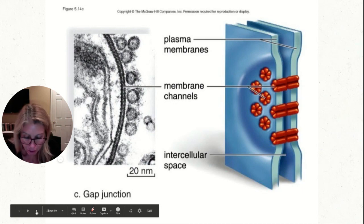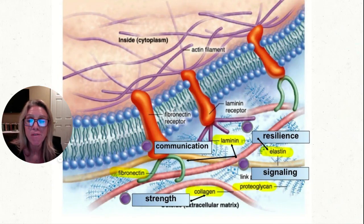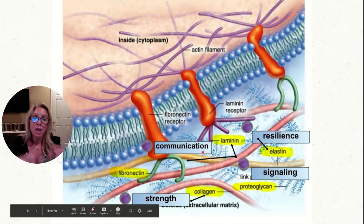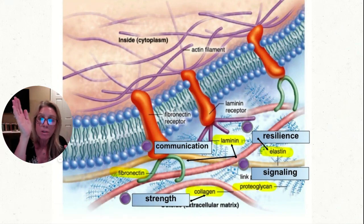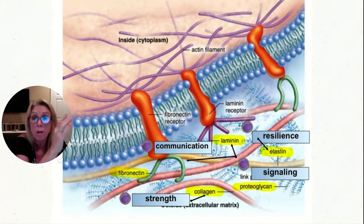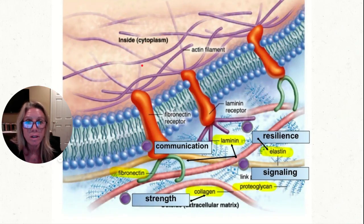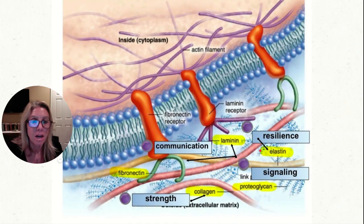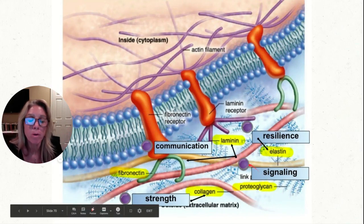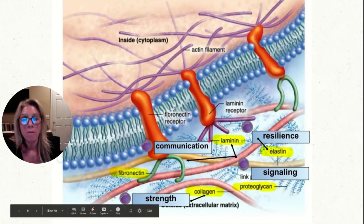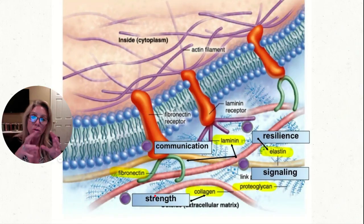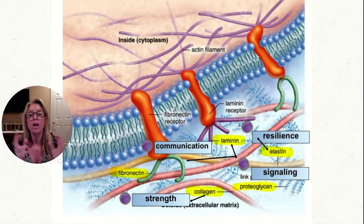Outside the cell, it's messier than simple diagrams show. You can see the cytoskeleton with filaments attached to proteins. Out there you have things like elastin — for resilience — proteoglycans used for cell signaling and communication, and collagen for strength. Those are additional proteins and carbohydrate side chains on the outside. Remember, we called that the extracellular matrix — and we talked about that in part one.